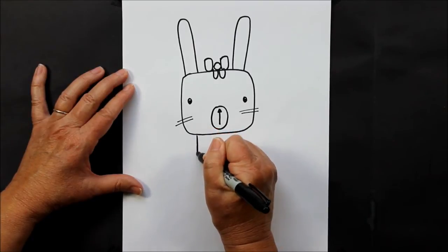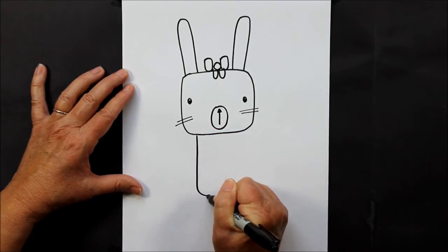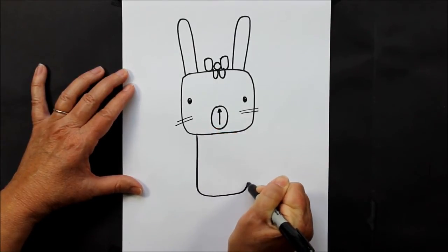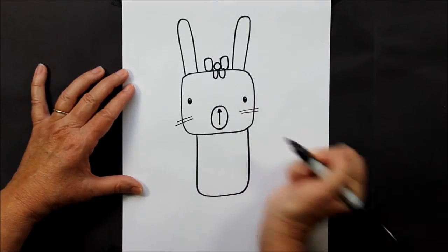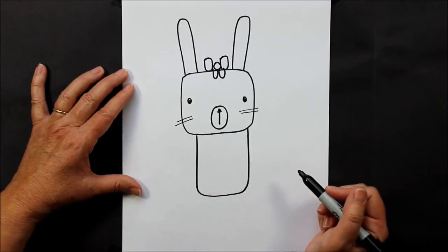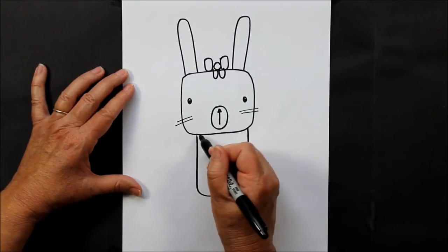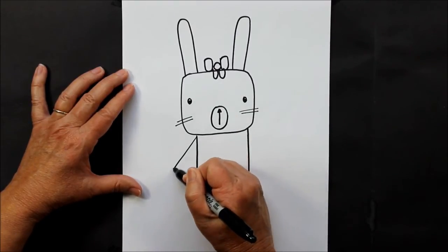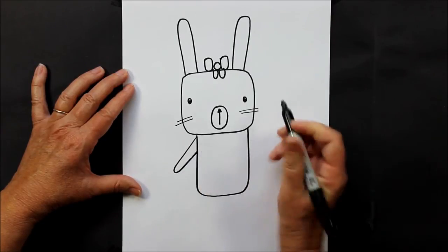It's kind of a rectangle that's rounded at the corners. We're going to have her arms come out, come around, and come back up, and the same on this side.